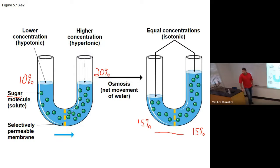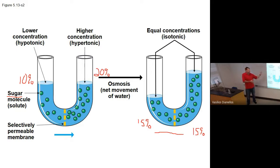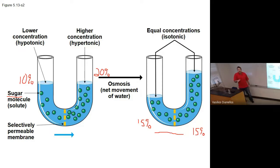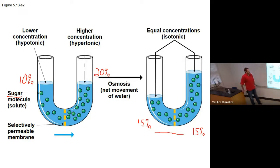An important thing to note is that hypertonic, hypotonic, and isotonic are all relative terms. Using the Gatorade example: if I hold up a glass of Gatorade and say 'is this hypotonic, hypertonic, or isotonic?' you'd say that's a trick question — because there's nothing to compare it to. Is it more concentrated than what? You have nothing to compare it to. Like height — I might be called tall in this room, but if my younger brother at 6'9" walked in, I'd be short. It's all relative.